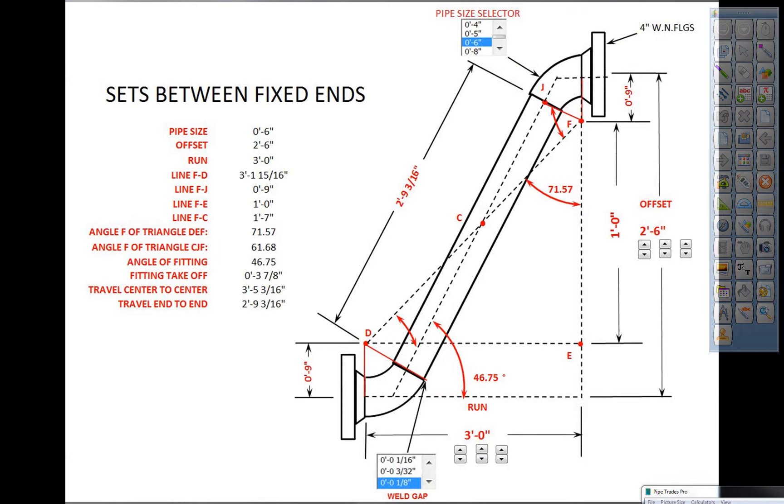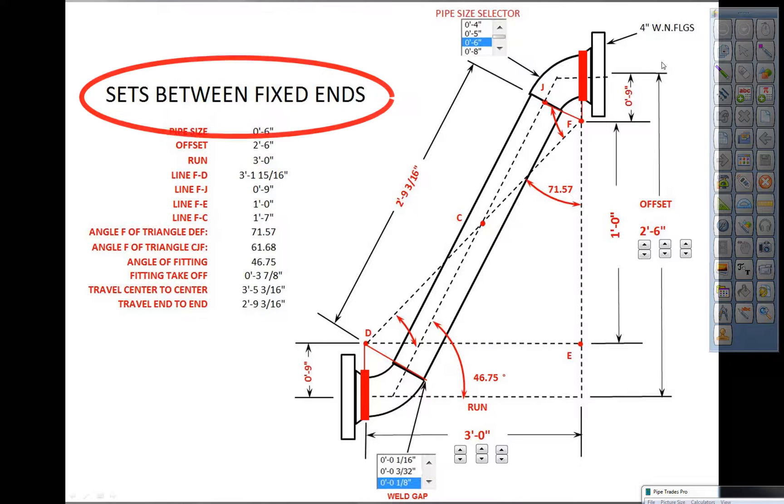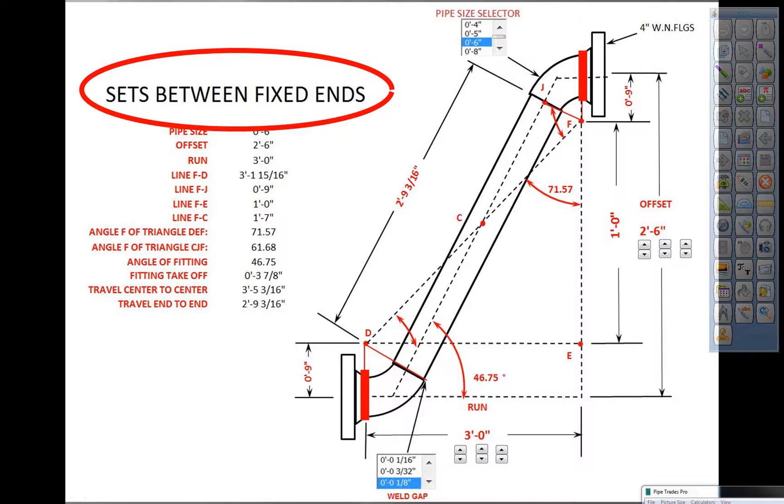Let's review this. We have a nozzle here, a weld neck, and a nozzle here, a weld neck. We can't make any cutbacks or move the flanges in any way, shape, or form. It sets between fixed ends. We have two foot six up and down, and we have three foot left to right.